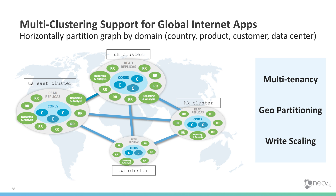Let's talk about the scalability features in Neo4j 3.4. In this release, we've added multi-clustering support. This allows your global internet apps to horizontally partition their graphs by domain, such as country, product, customer, or data center.